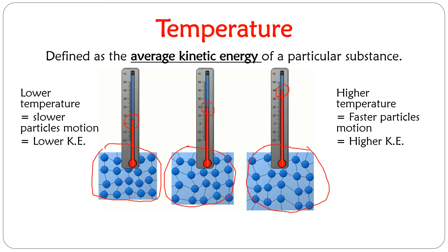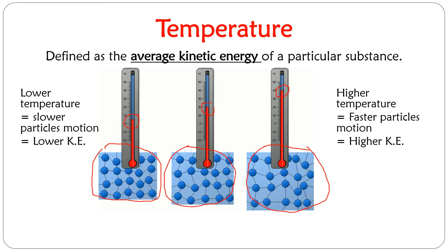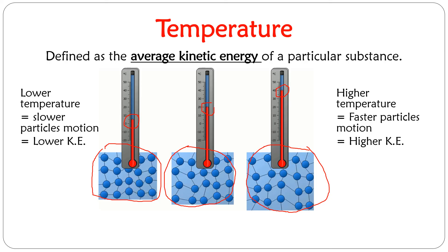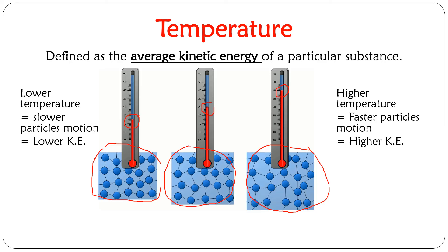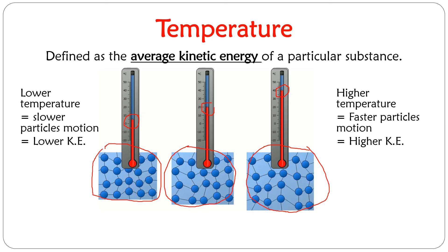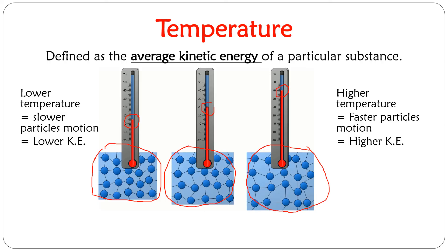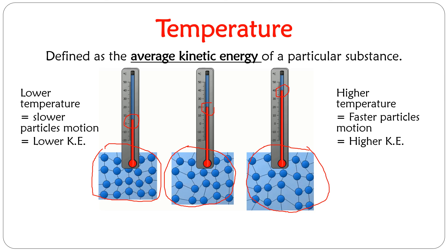That is exactly why temperature is defined as average kinetic energy. The faster the particles are moving, the higher the temperature. The slower the particles are moving, the lower the temperature.